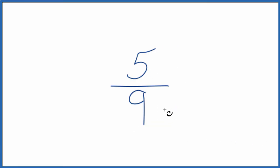So to get 5 ninths to a decimal, we could just on our calculator divide 5 by 9. When we do that,